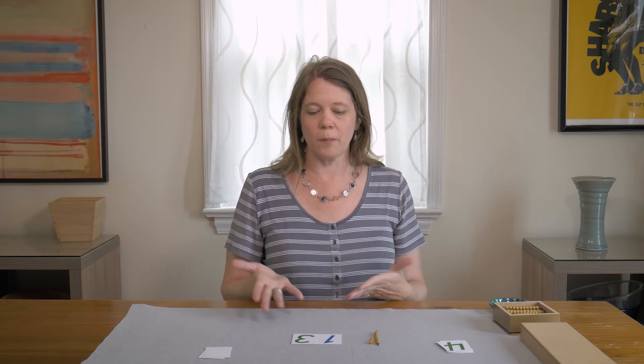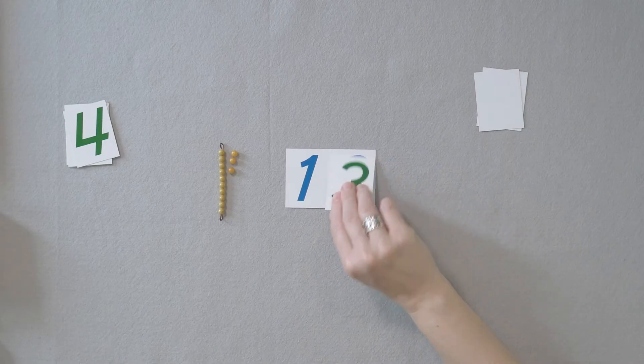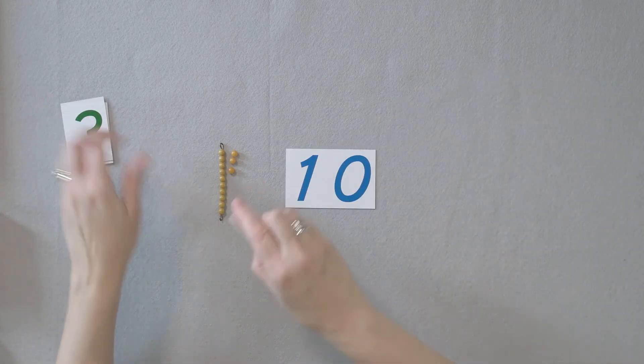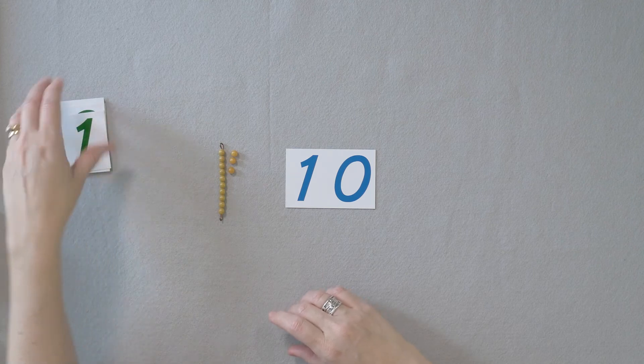With the children, you could keep going at this point, or you could stop and review 11, 12, and 13 by placing the cards back and doing it again, having the children build it and count it, whatever the children need to support their development.